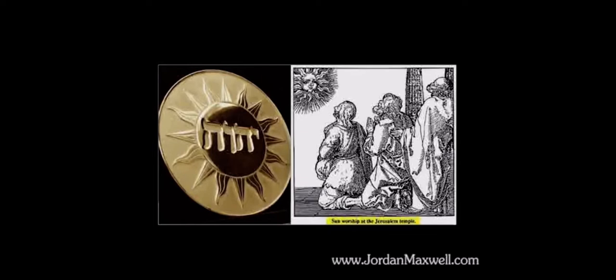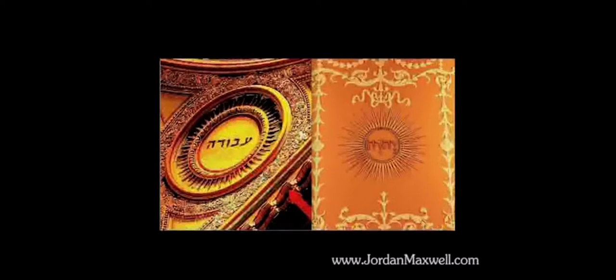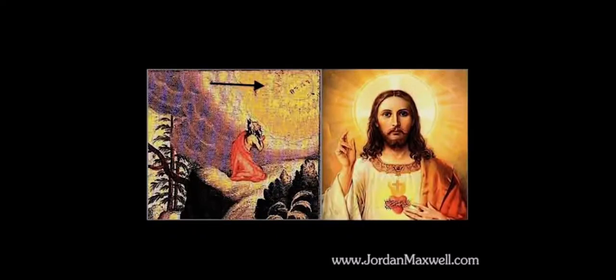Every time and in every instance you see the name of God — the four Hebrew letters of the Tetragrammaton, which is the name of God — it is always within a sun. On the right, you will see a picture of sun worship at the Jerusalem temple. Always the Tetragrammaton, God's name in Hebrew, is within the sun. Here's Moses praying to God's sun, and here's the sun God for Christians — to pray to Jesus, God's Son. God's Son behind his head shows you a sun God.